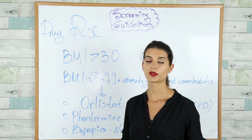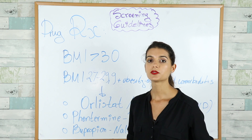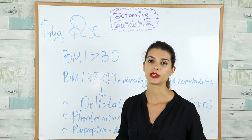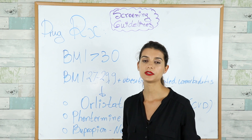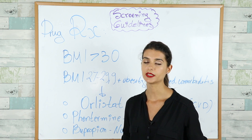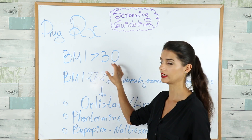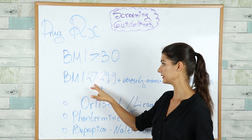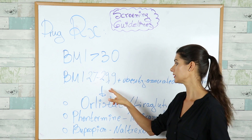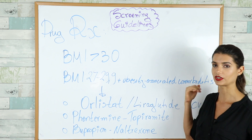At the end of this video, here is some bonus information on drug therapy in obese patients. If obese patients fail to lose more than 5% of their body weight in 6 to 12 months using lifestyle modifications and dietary changes, you can start them on drug therapy if their BMI is more than 30, or between 27 and 29.9 with obesity-associated comorbidities.